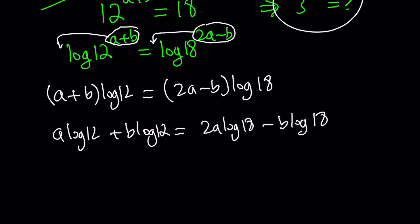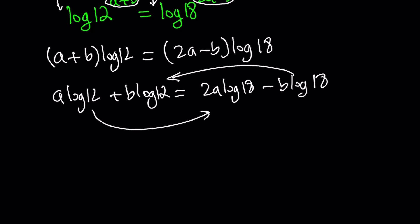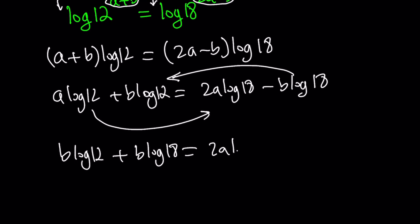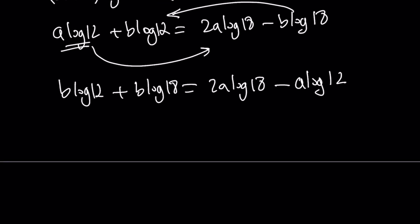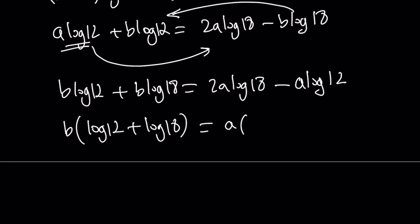Now we put the a's on one side and the b's on the other, because we're looking for 3 to the power a over b, so separating them makes sense. Moving terms: b·log12 plus b·log18 on the left equals 2a·log18 minus a·log12 on the right. We can factor out b on the left and a on the right. Don't take the 2 out — it's not a common factor; keep it inside.